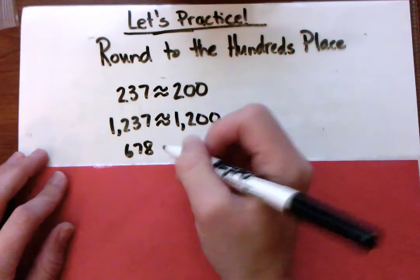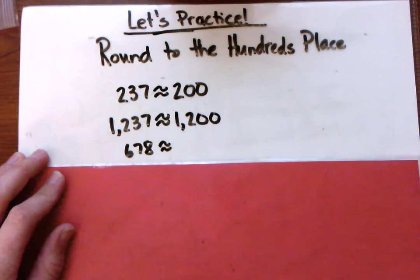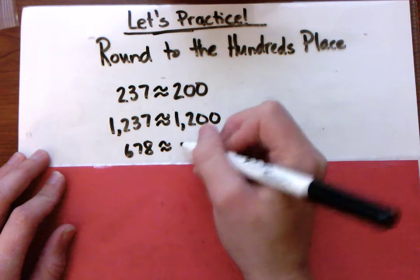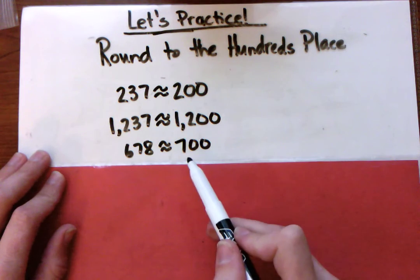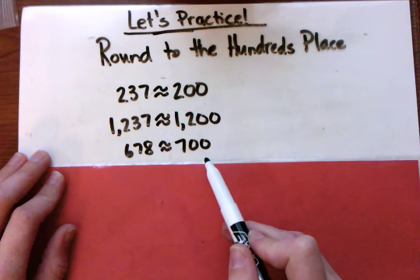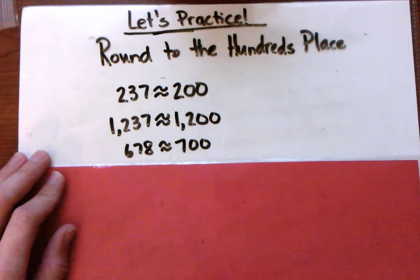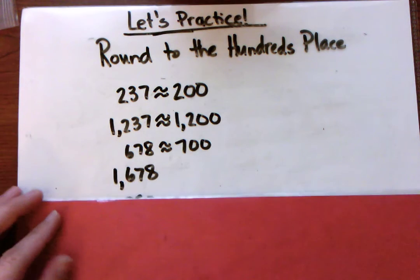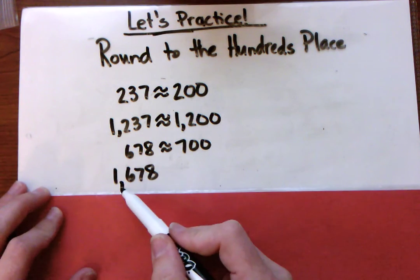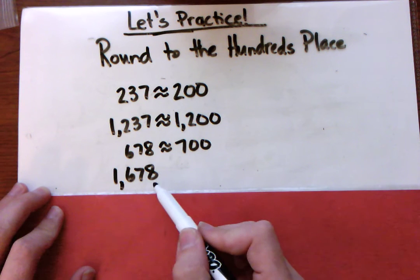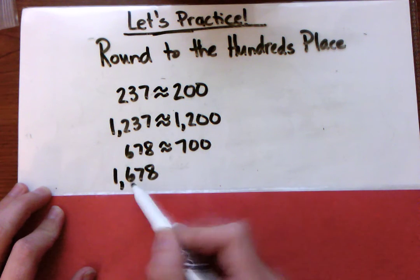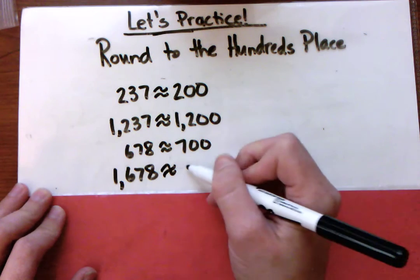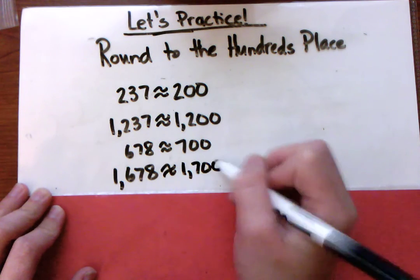Six hundred seventy-eight rounds to 700. If you need to check your work, pause the video and check it on a number line. One thousand six hundred seventy-eight rounded to the hundreds place is one thousand seven hundred.